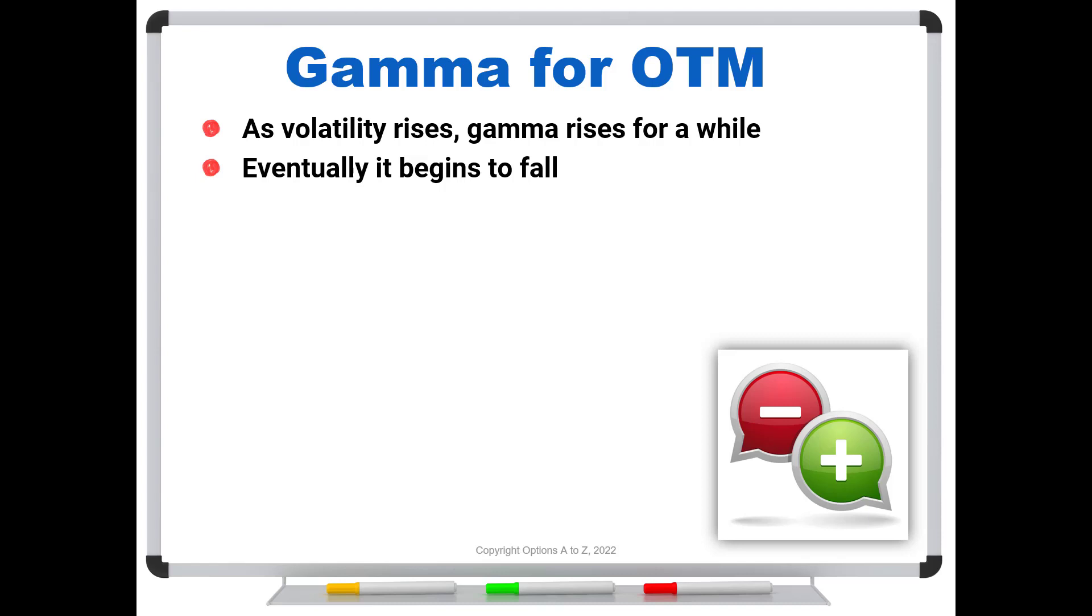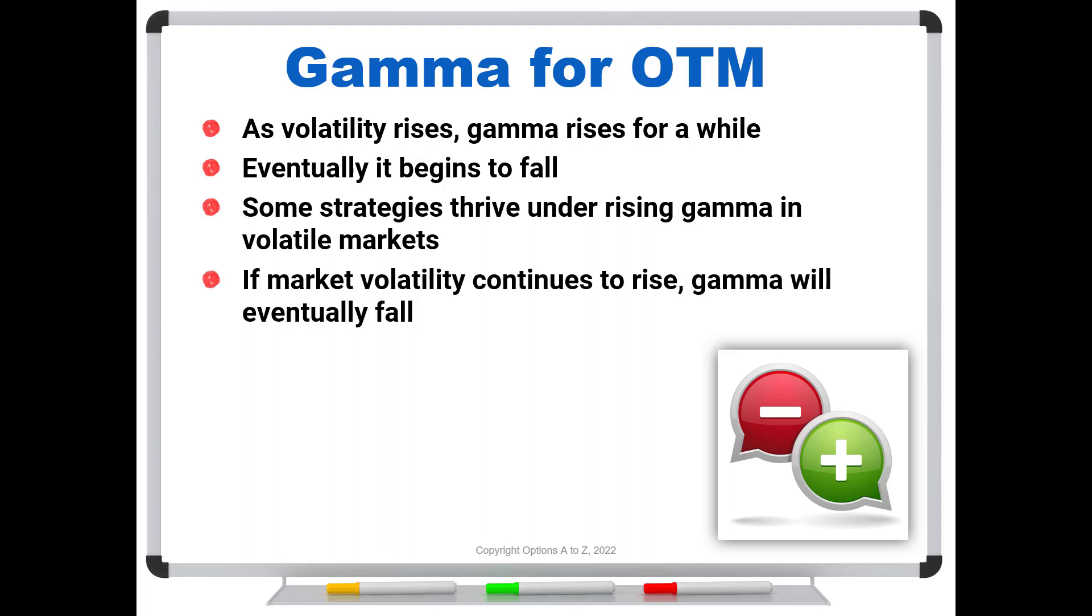And so as a reminder, some strategies thrive under rising gamma in volatile markets. But if the market volatility continues to rise, gamma will eventually fall. And that's a point that a lot of traders miss. And that's why their strategies often don't work out as expected.